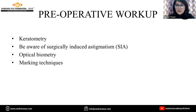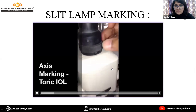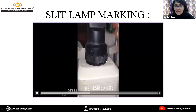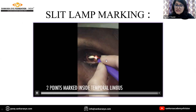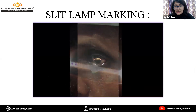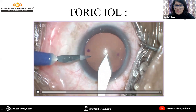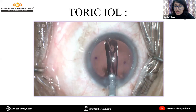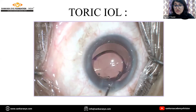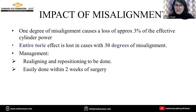We need to do a thorough pre-operative workup before proceeding to IOL placement. One technique is the slit lamp marking technique, where the patient is seen at the slit lamp and we rotate the slit beam to the desired axis. We mark two points inside the temporal limbus and two points inside the nasal limbus at the desired axis. While placing the toric IOL, we make sure that the marks on the toric IOL get aligned to the marks on the cornea.